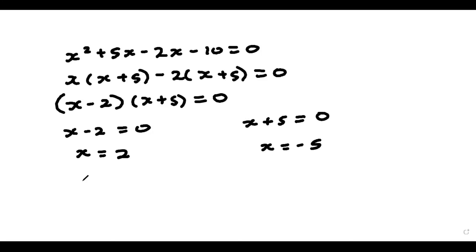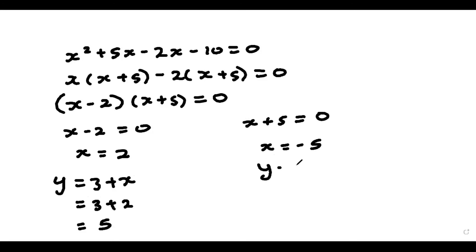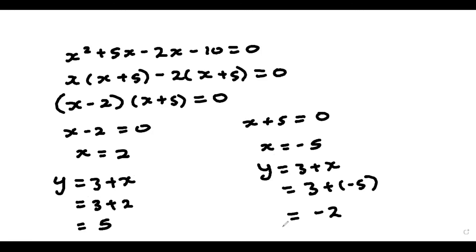Using the equation y equals 3 plus x: when x equals 2, y equals 3 plus 2, so y is equal to 5. Using the same equation with x equals minus 5, we have 3 plus minus 5, which gives us minus 2. So when x is equal to 2, y is equal to 5, and when x is equal to minus 5, y is equal to minus 2. That's basically all there is to simultaneous equations with one non-linear and one linear equation. Thank you guys for staying tuned, and I'll see you guys next time on the DarkTube.